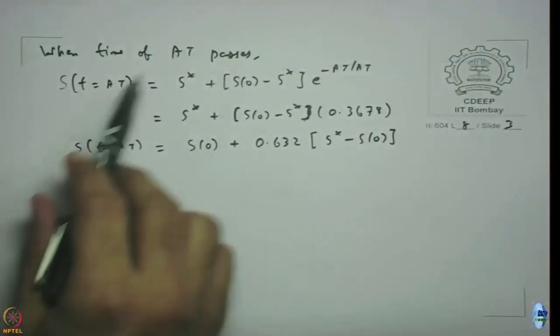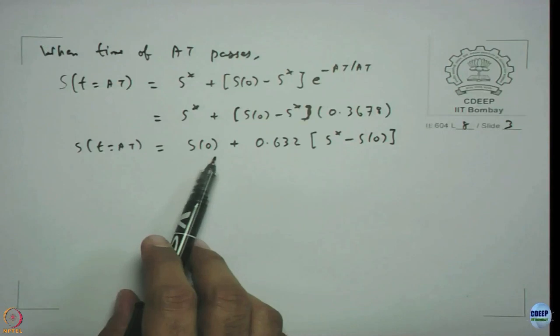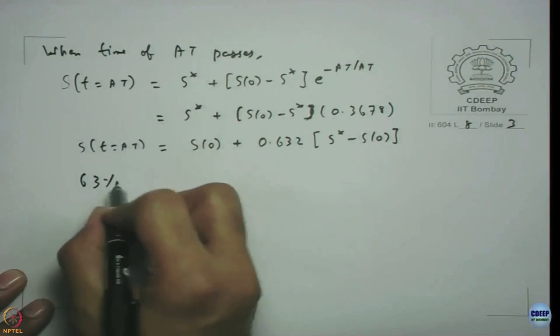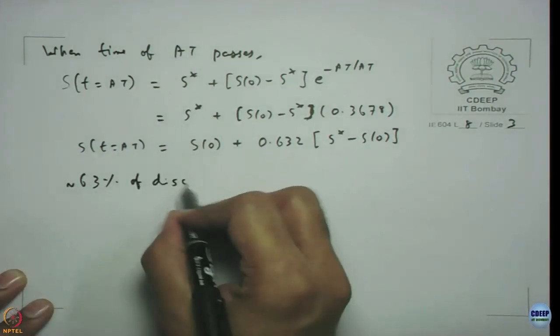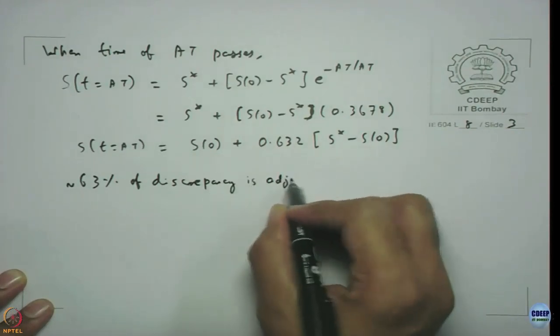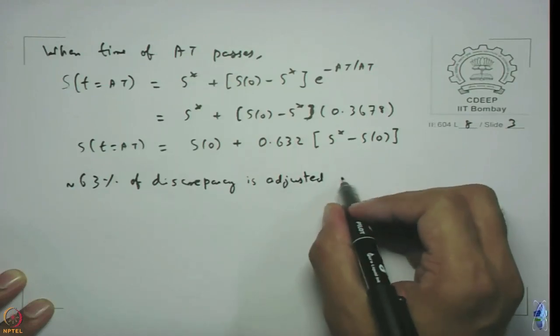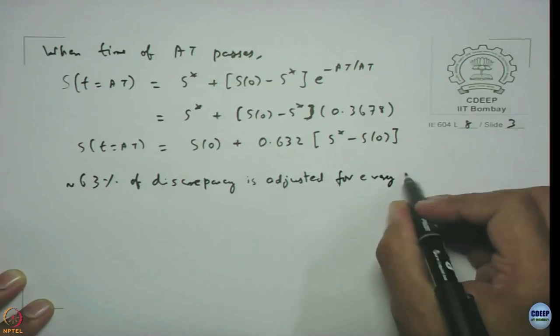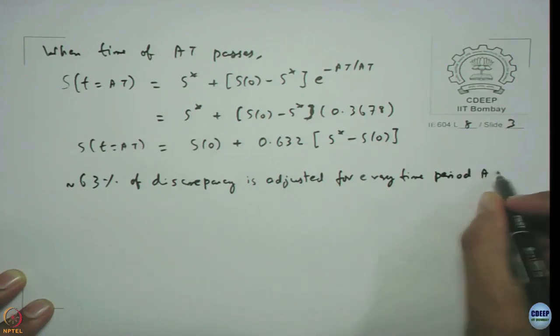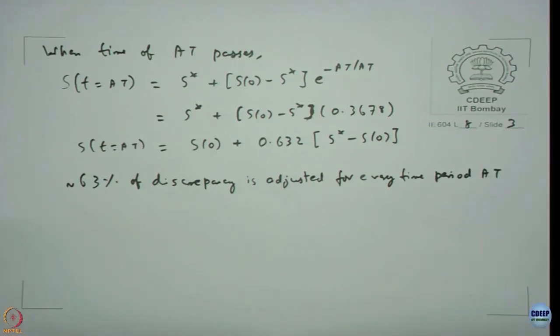As time unit AT passes, we adjust 63 percent of the discrepancy. Using simulation since time step was 1, the resolution is not great, but if we reduce the time step we can see that 63 percent of discrepancy is adjusted for every time period AT.